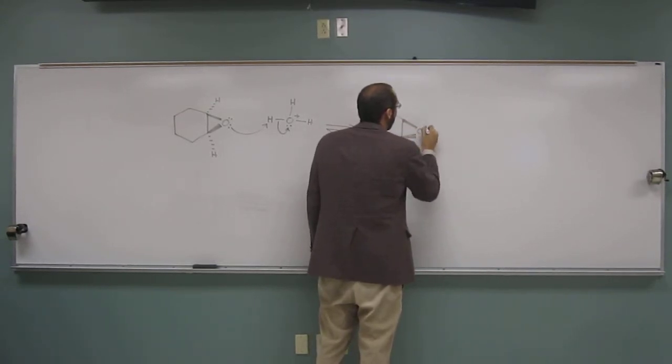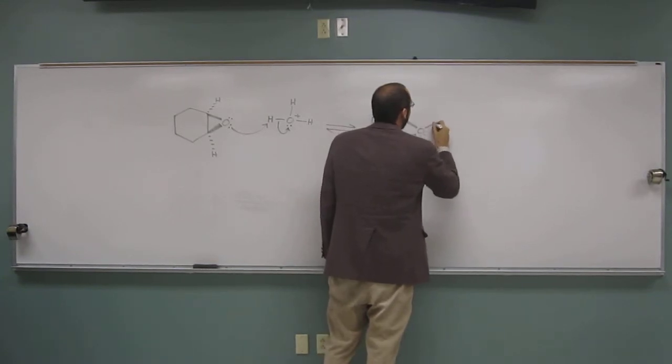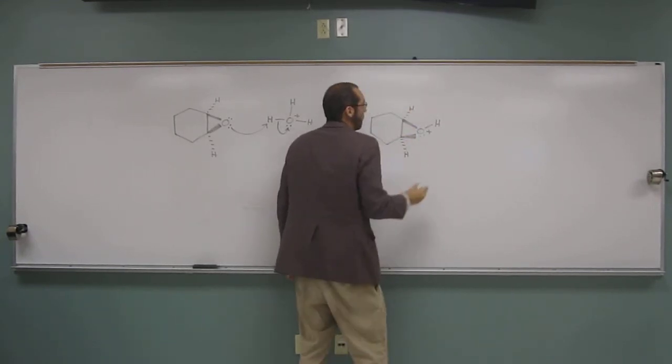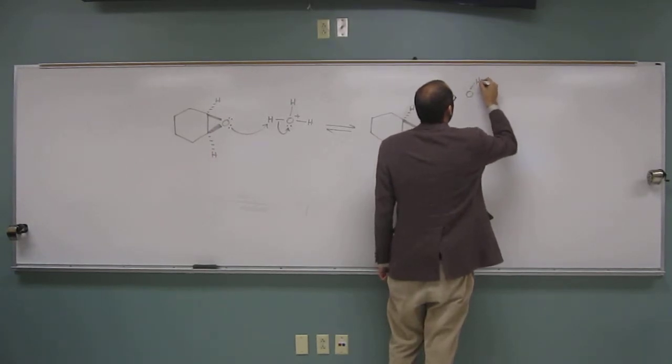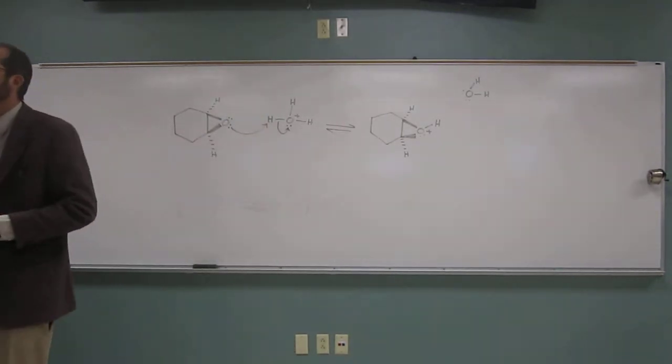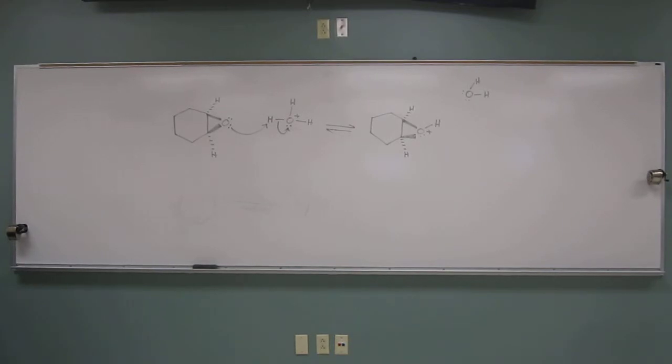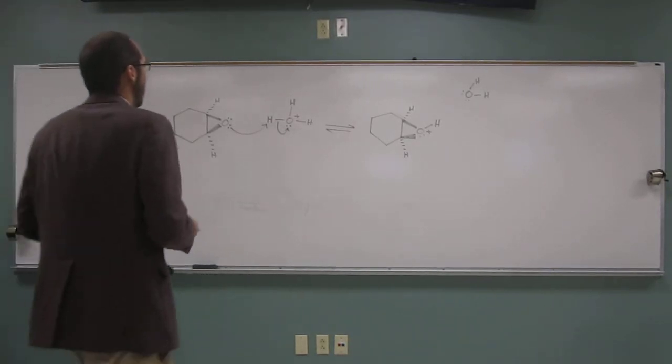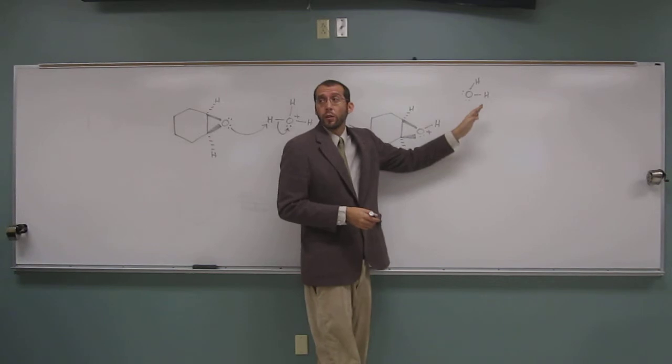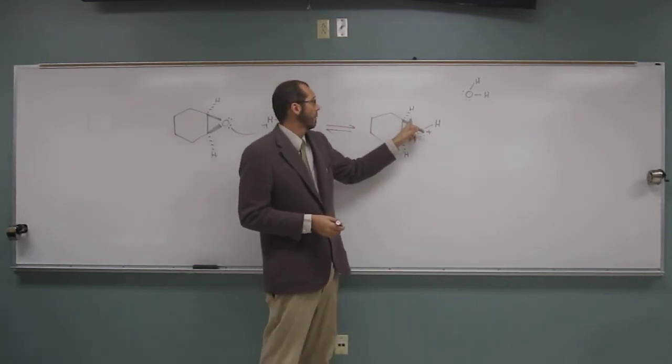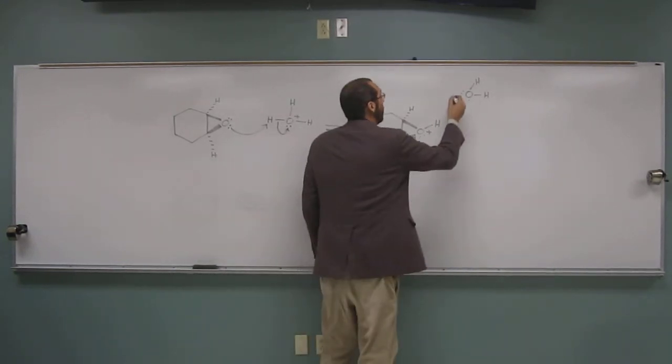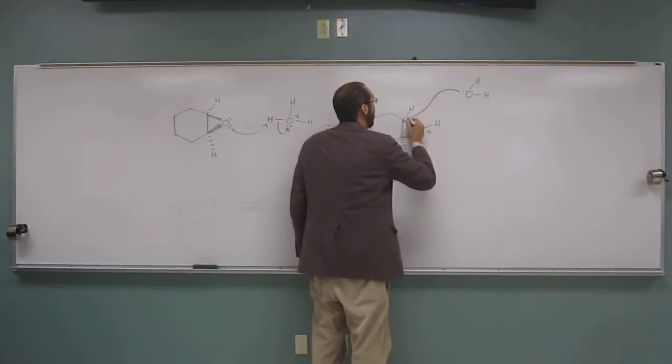So now we have a protonated epoxide as our intermediate and water. Of course, this acid is in a solution of water. So what's going to happen now is that water is actually going to do an SN2 attack reaction on the cyclohexane or the epoxide ring there. It'll attack there.